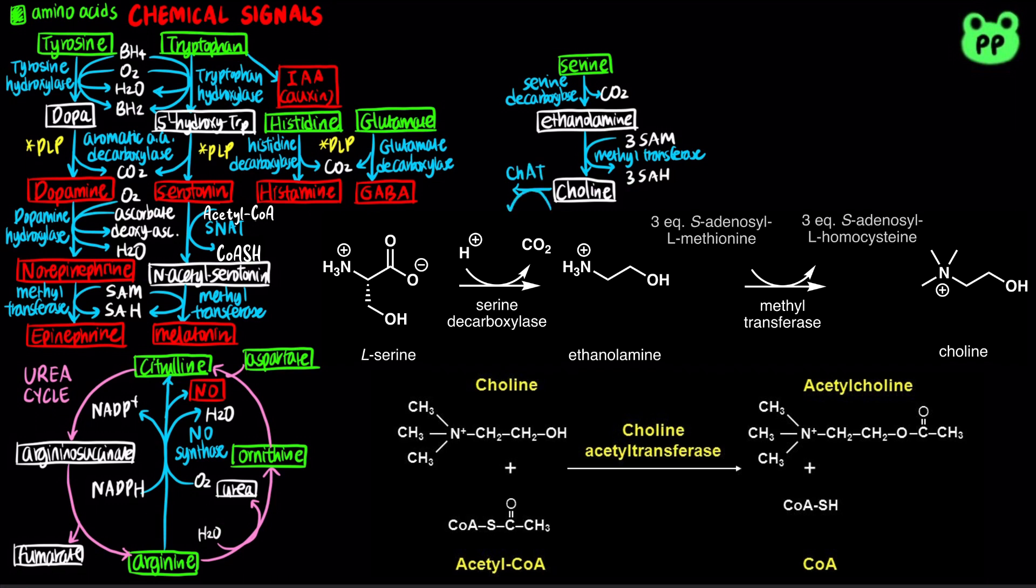Choline acetyltransferase, abbreviated as ChAT, then condenses choline and acetyl-CoA to form acetylcholine, which is the chief neurotransmitter at the neuromuscular junction and the parasympathetic nervous system that promotes rest and digest.